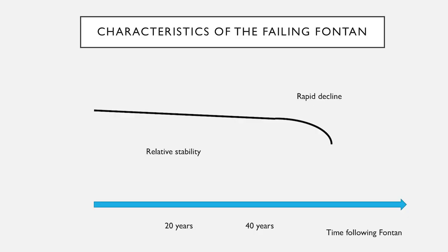The characteristics of the failing Fontan as we see in our routine practice: patients are relatively stable for many, many years and don't spend much time as inpatients. Most are in functional class 2, some are functional class 1 — we've had one patient who runs marathons in his late 40s. But the Fontan circulation is characterized by a rapid decline later in life, and the time at which that happens is really difficult to determine.